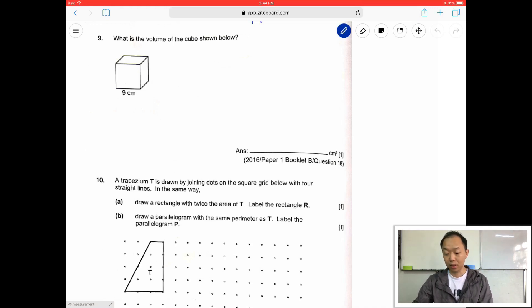9, 9, 9. So it's 81 times 9. This is 9, 7. Okay, 729 cm³. Next question.